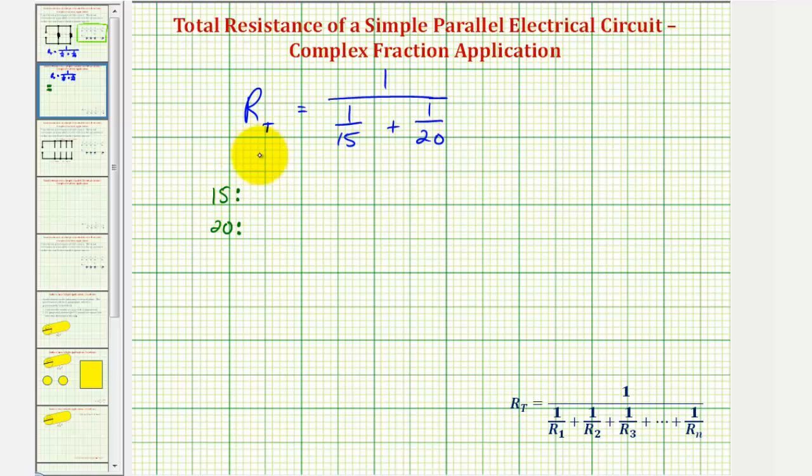For multiples of fifteen: fifteen times one is fifteen, fifteen times two is thirty, fifteen times three is forty-five, fifteen times four is sixty, and fifteen times five is seventy-five. For multiples of twenty: twenty times one is twenty, twenty times two is forty, twenty times three is sixty. We can stop here, because the smallest number that's common in these two lists is sixty, which would be our least common denominator.